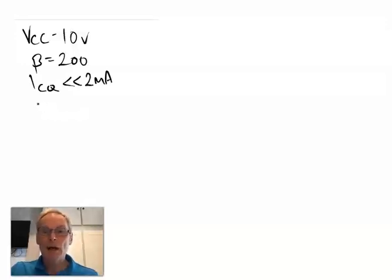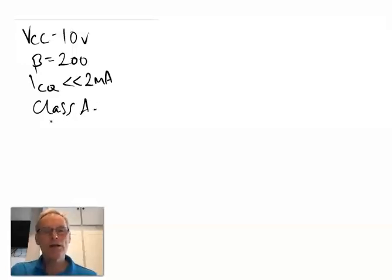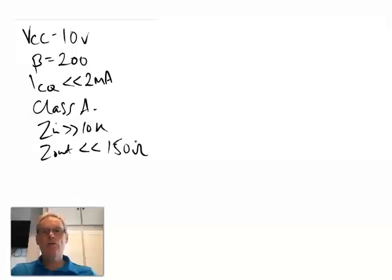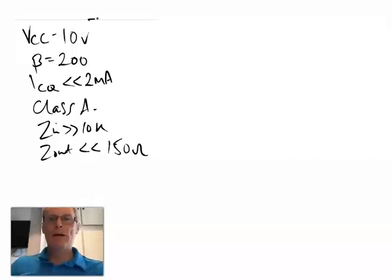It needs to be Class A for lowest distortion, the input impedance Zin needs to be greater than 10 kilohms, and the output impedance Zout needs to be smaller than 150 ohms. That's our amplifier spec.